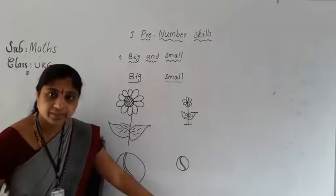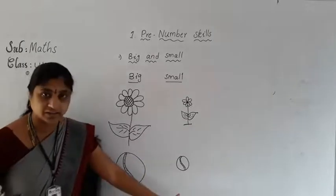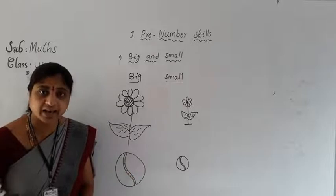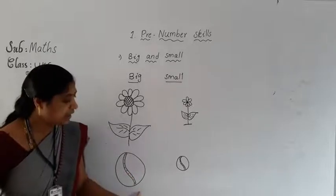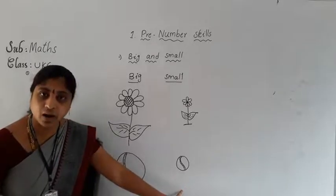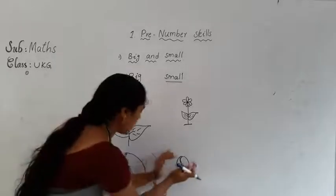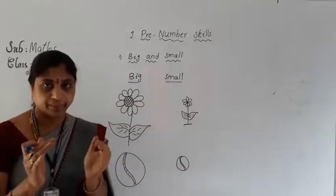Look at here, what is this? These are balls. Both balls are same size? No — one ball is big and another ball is small. Means this one is the small.